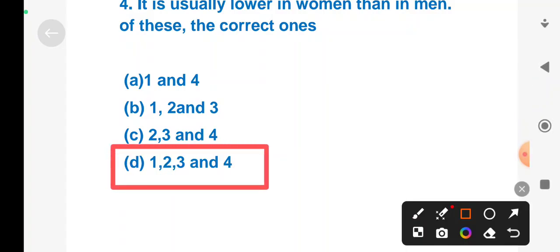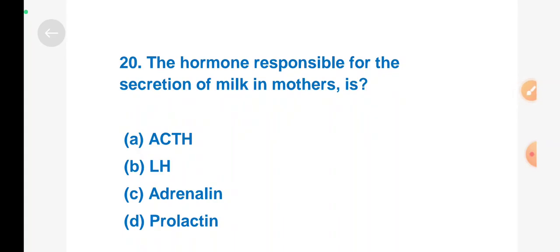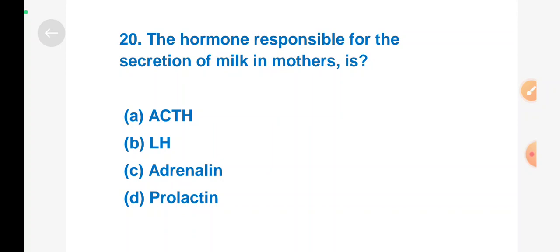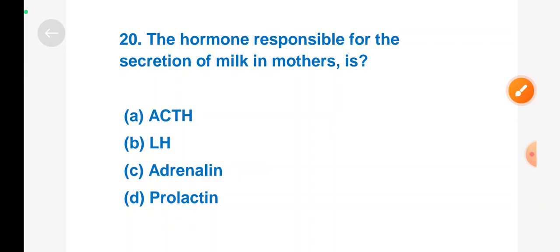Next question: The hormone responsible for the secretion of milk in mothers is - Option A: ACTH, Option B: LH, Option C: adrenaline, Option D: prolactin. Right answer is Option D, prolactin. Thanks for watching my video, like, share and subscribe.